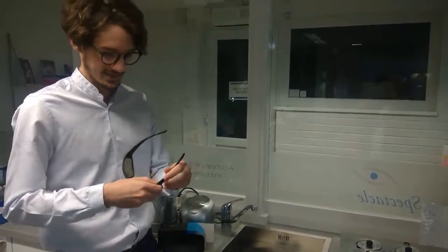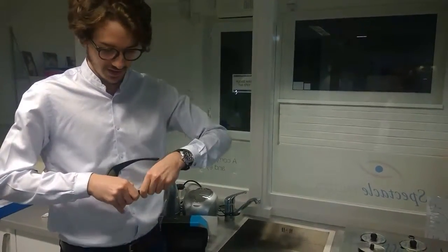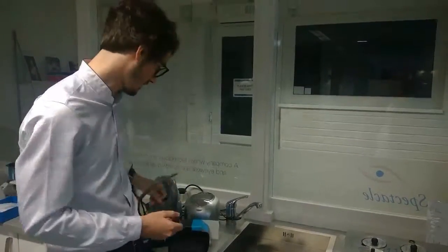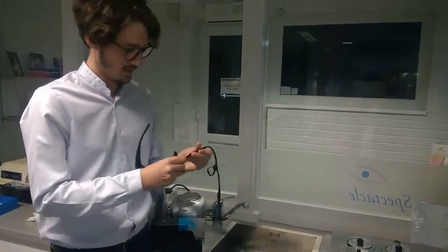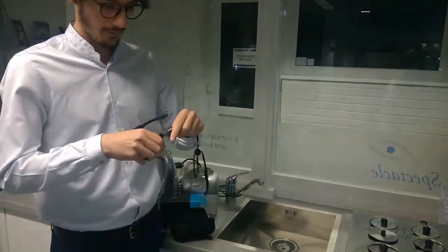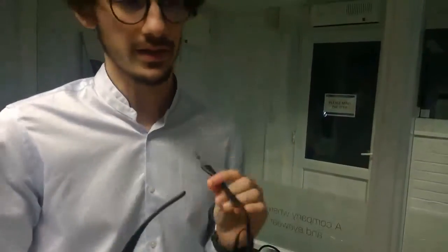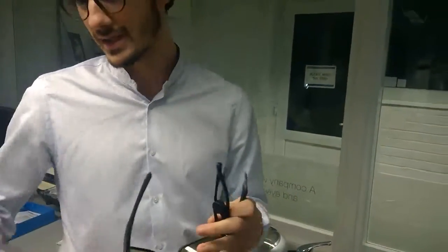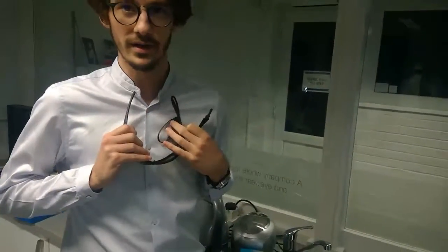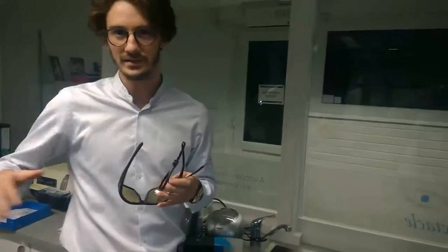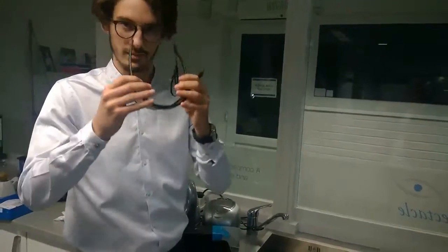And the cool thing about these is that the arms are interchangeable, so you can take that arm off and fit it with a sport strap which goes around the back of your head. Let's say you're sailing on your boat, you go inside to the cabin, you can just hang them around your neck and not worry about not being able to see, and then when you go back out into the sun, put them on.